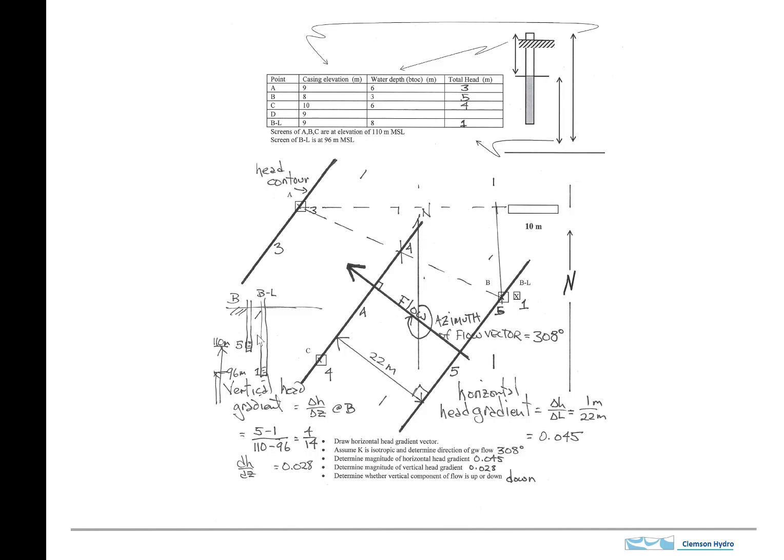and so we can see that the head here at that point is 5, and the head here is 1. So this is a hydraulic head gradient, and it's implying that the flow is downward.